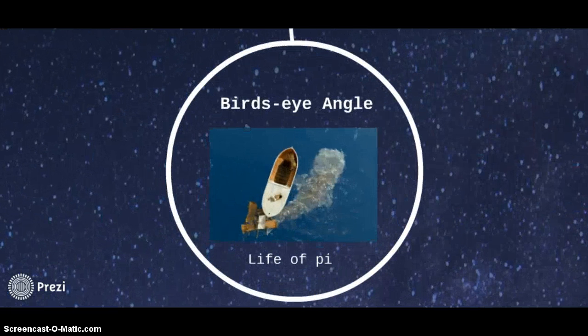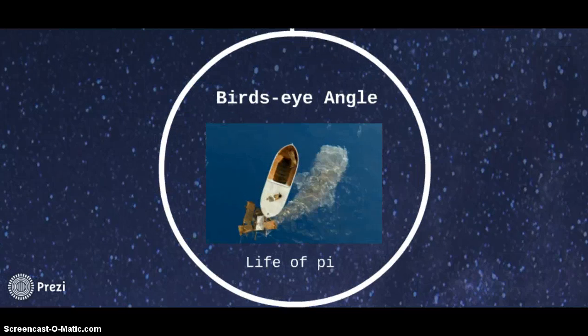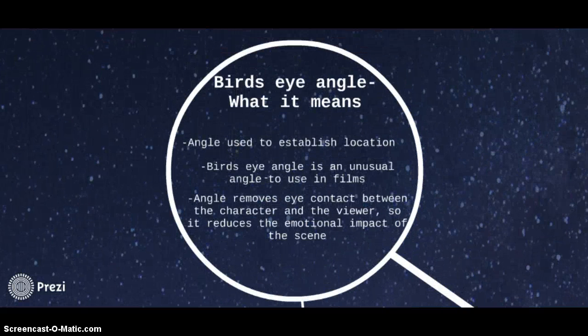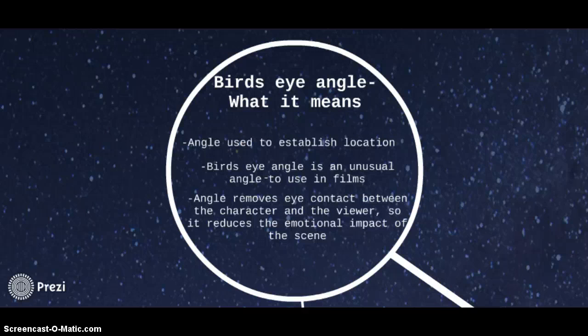The first angle I will be discussing is the bird's eye angle. This is a bird's eye angle used in Life of Pi. The bird's eye angle is used to establish location. It is an unusual angle to use in films as it removes the eye contact between the character and the viewer, so it reduces the emotional impact of the scene.